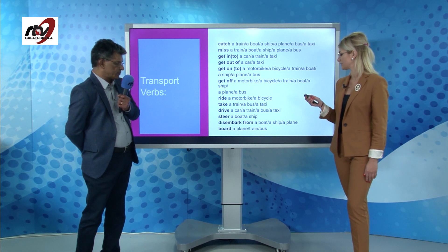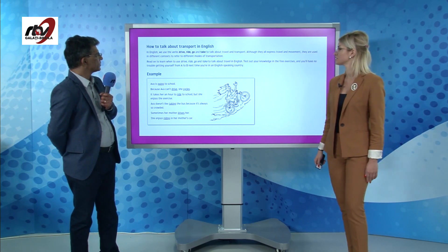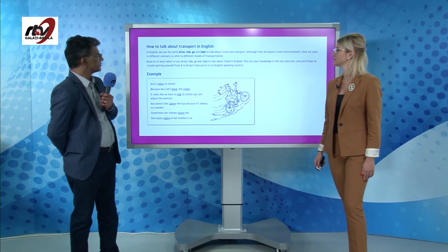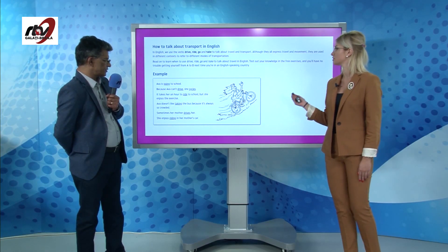In English we use the verbs drive, ride, go and take to talk about travel and transport. For example: Ava is going to school. Because Ava can't drive, she cycles. It takes her an hour to ride to school but she enjoys the exercise. Ava doesn't like taking the bus because it's always crowded. Sometimes her mother drives her — she enjoys riding in her mother's car.